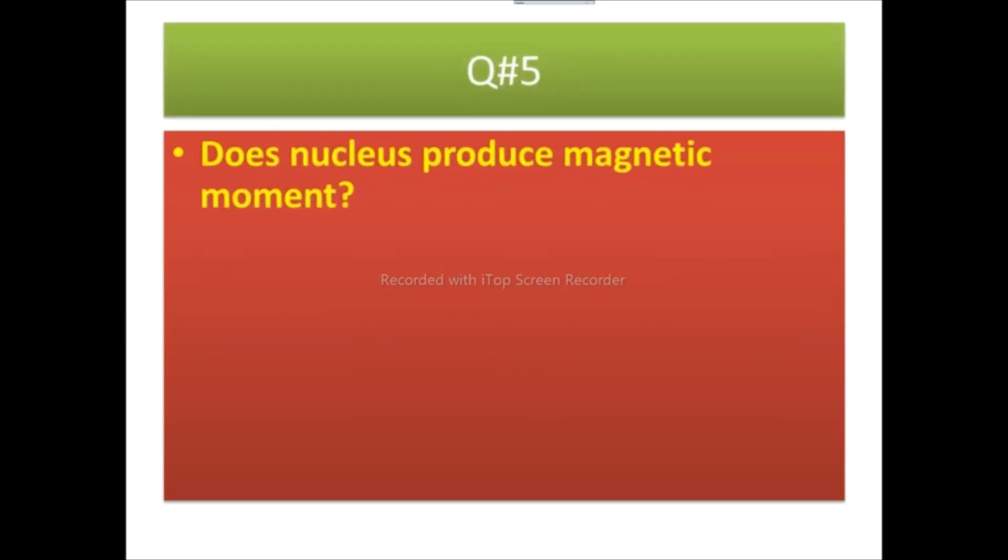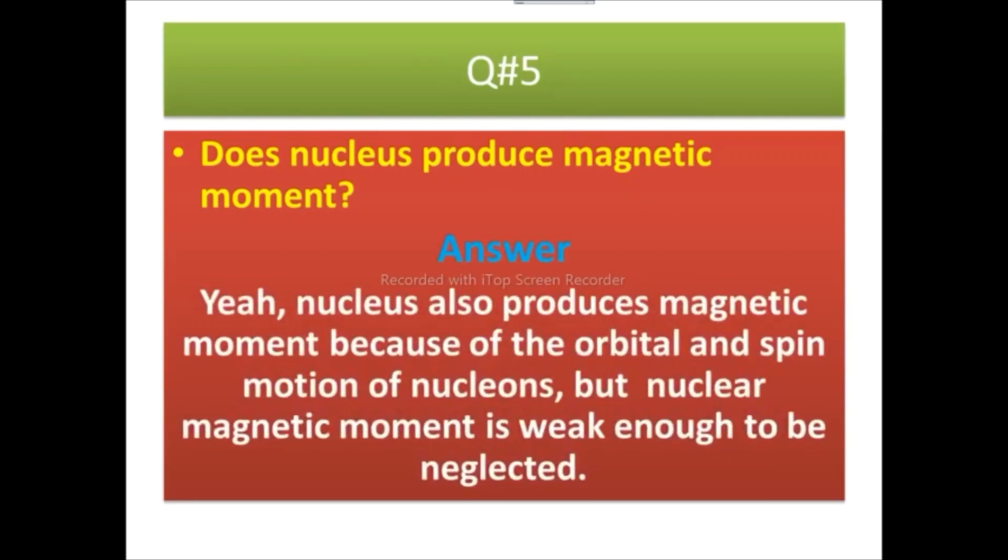Question number 5 is Does nucleus produce magnetic moment? Answer is Yes. Nucleus also produces magnetic moment because of the orbital and spin motion of nucleons. But nuclear magnetic moment is weak enough to be neglected.